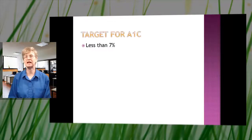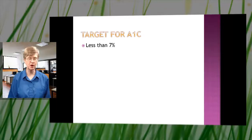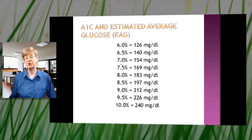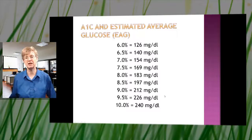So it's an average of all of your numbers. The target for A1C is usually less than seven percent. For some people the target number may be a different percentage, so it is a good idea to talk to your doctor or whoever helps you manage your diabetes as to what your target is. If your A1C is seven percent, most of your blood sugar checks are going to be right around 154.